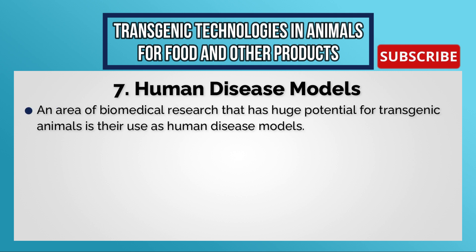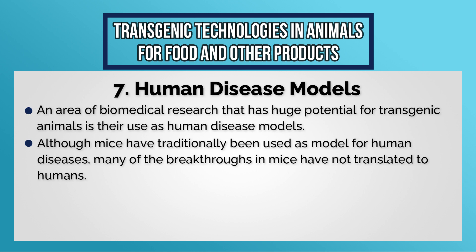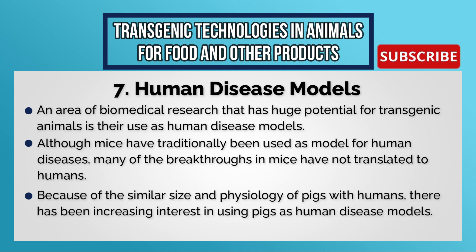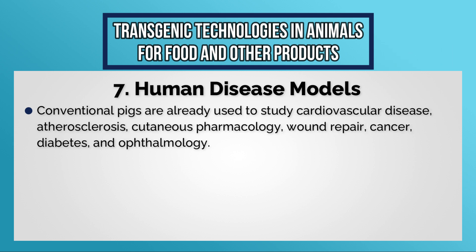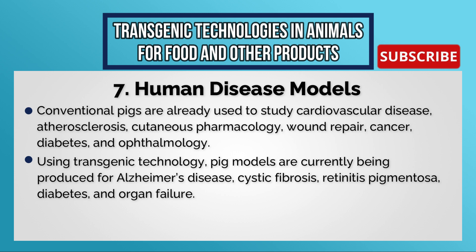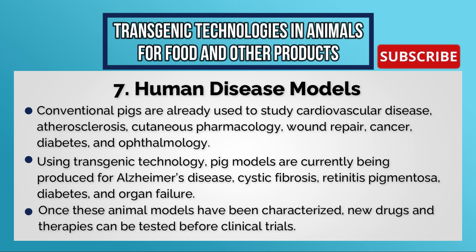Human disease models: an area of biomedical research with huge potential for transgenic animals is their use as human disease models. Although mice have traditionally been used as models for human diseases, many breakthroughs in mice have not translated to humans. Because of the similar size and physiology of pigs to humans, there is increasing interest in using pigs as human disease models. Conventional pigs are already used to study cardiovascular disease, atherosclerosis, cutaneous pharmacology, wound repair, cancer, diabetes, and ophthalmology. Using transgenic technology, pig models are currently being produced for Alzheimer's disease, cystic fibrosis, retinitis pigmentosa, diabetes, and organ failure. Once these animal models are characterized, new drugs and therapies can be tested before clinical trials.